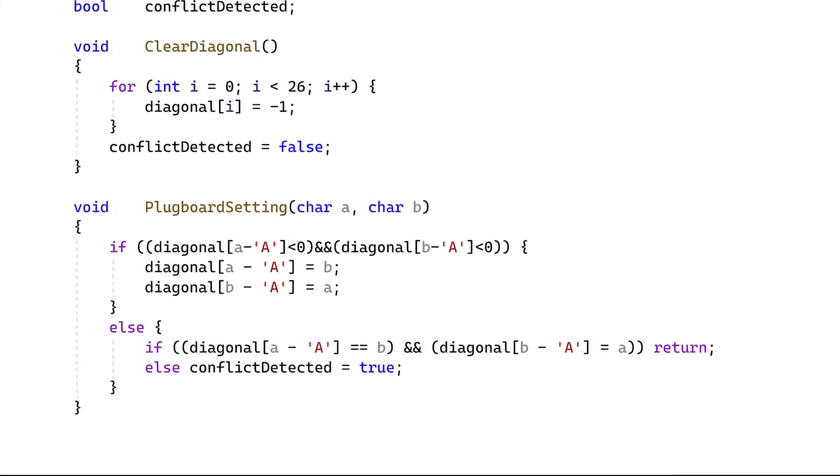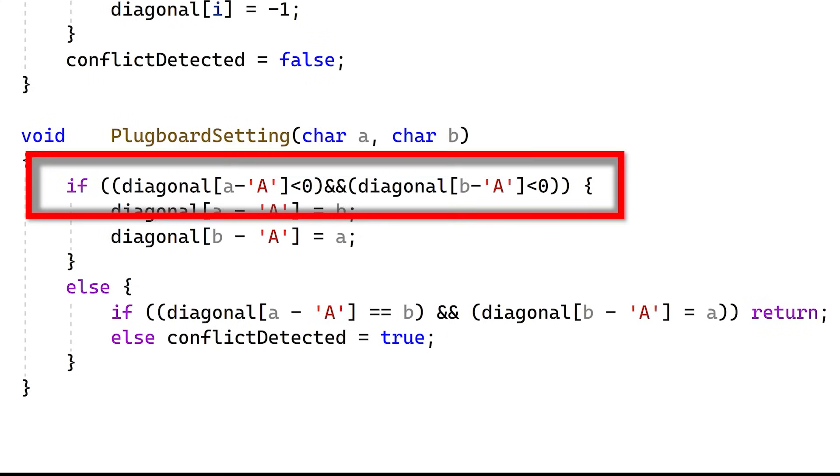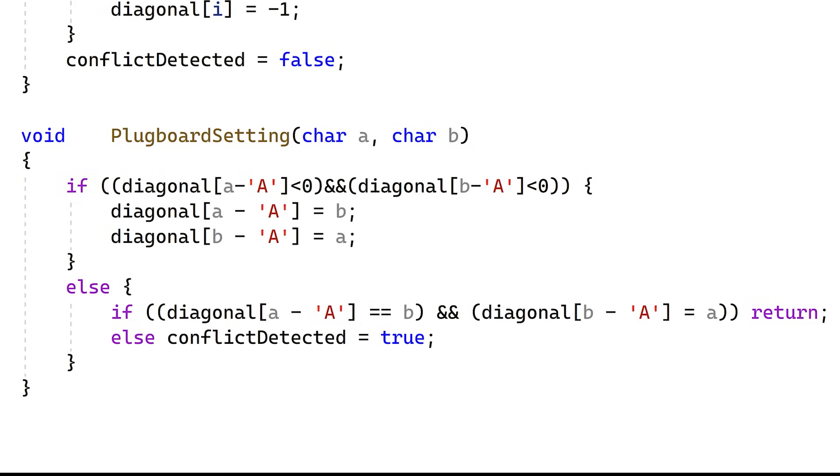Now what I need is another subroutine that tries to add a new plugboard mapping. A and B represent the letters of the new mapping that I want to add. If both A and B are unused, meaning that both are less than 0, i.e. minus 1, then I just go ahead and add in the new mapping.